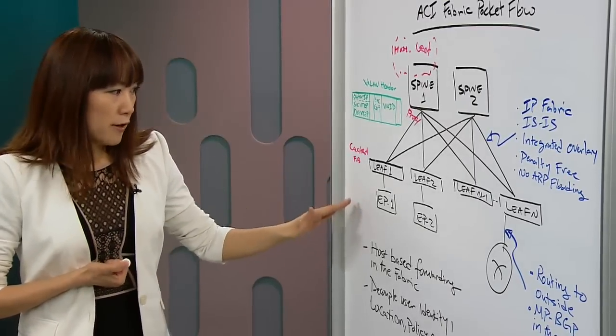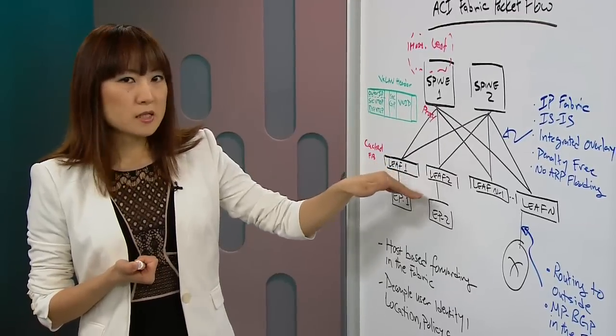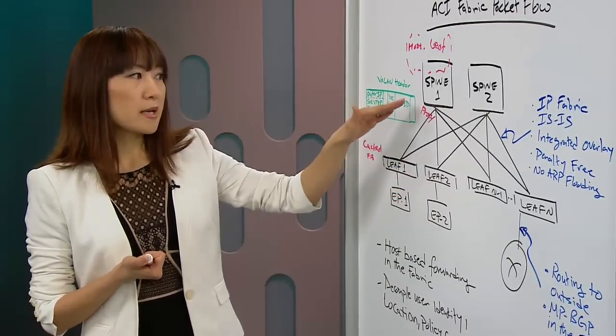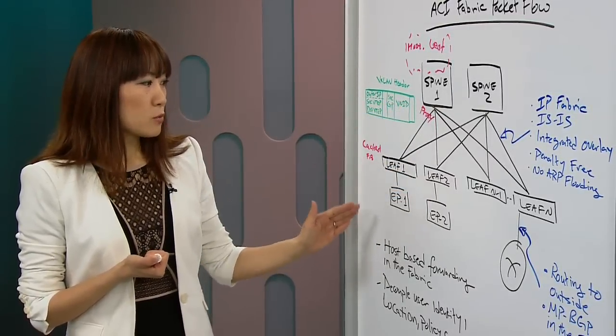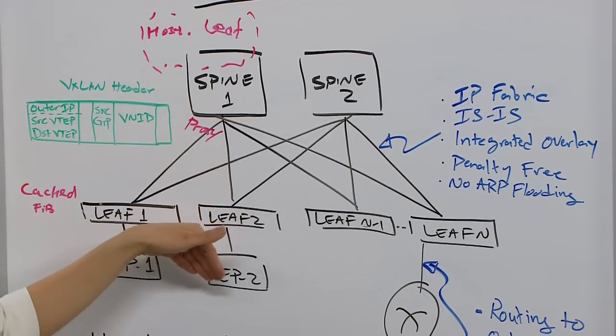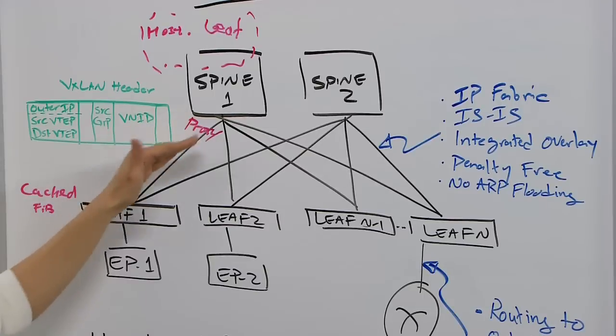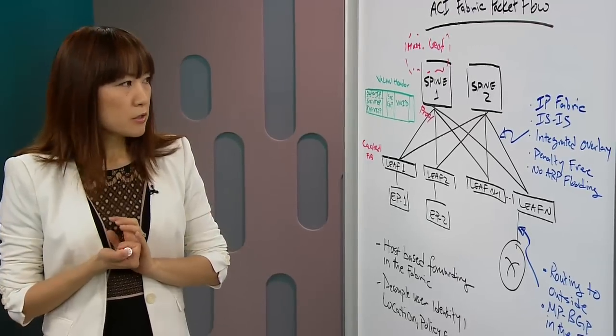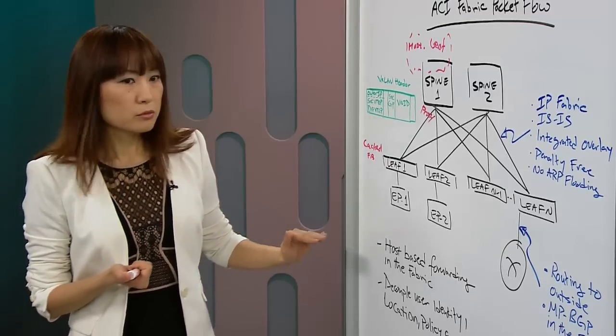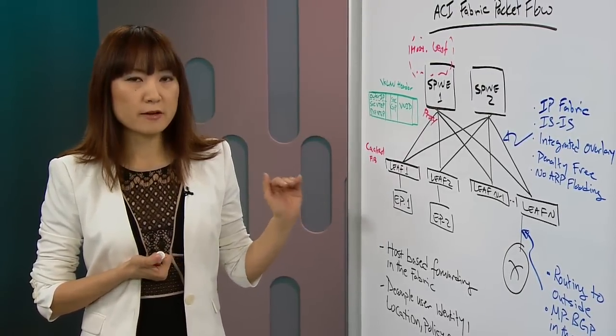As you can see, either way, either the ingress leaf resolves the egress leaf directly, or it uses SPINE as proxy, the packets will be forwarded just two hops away to the destination. And the forwarding is always done in hardware. This is a very quick overview of packet flow, or unicast packet flow in ACI fabric.